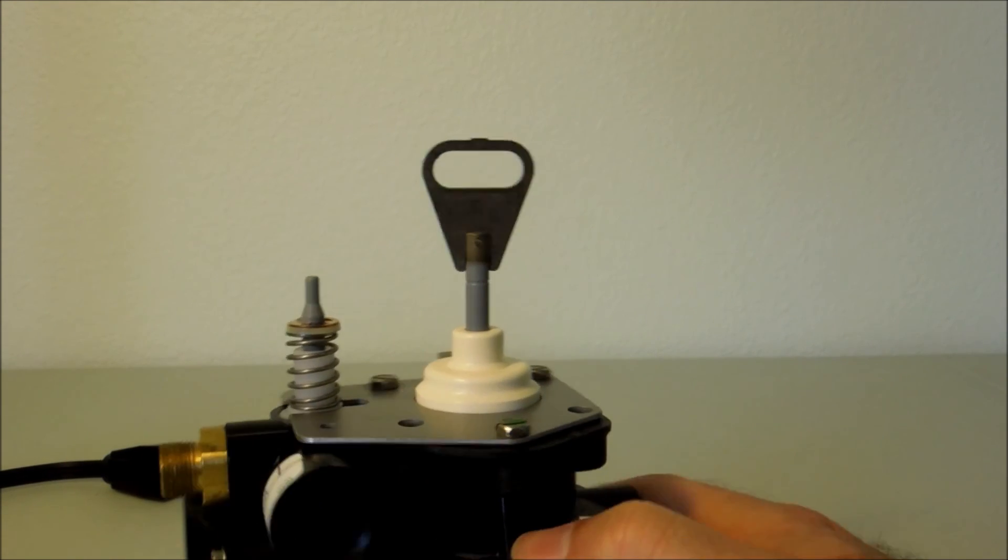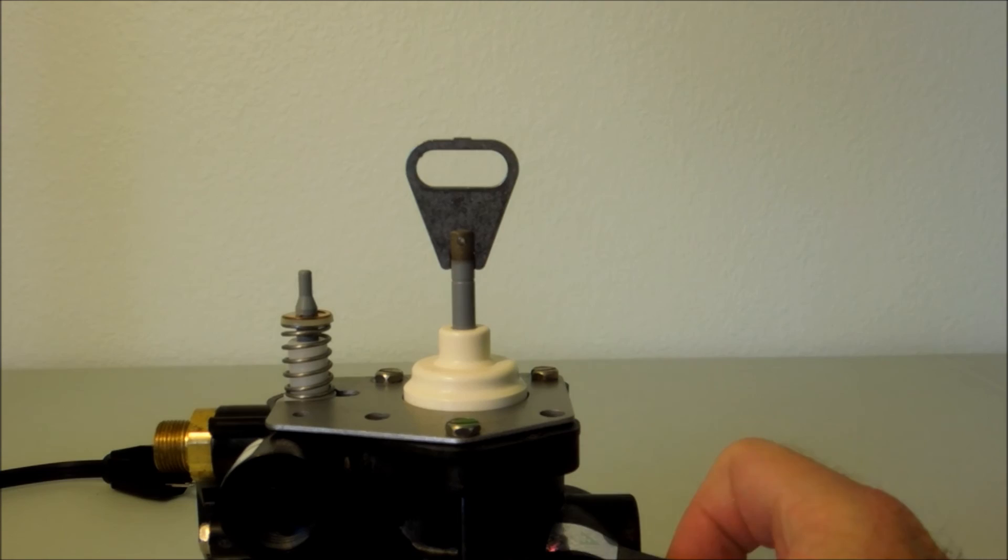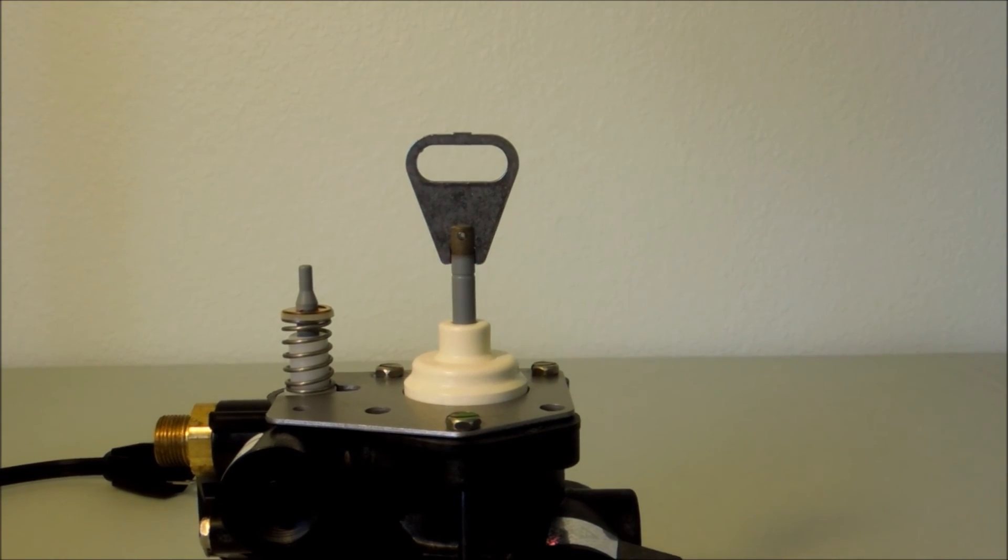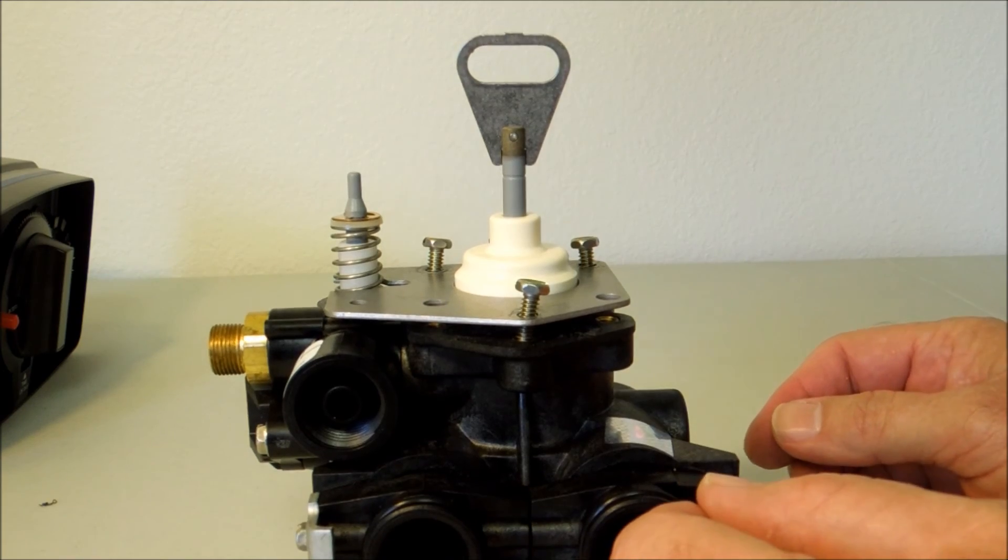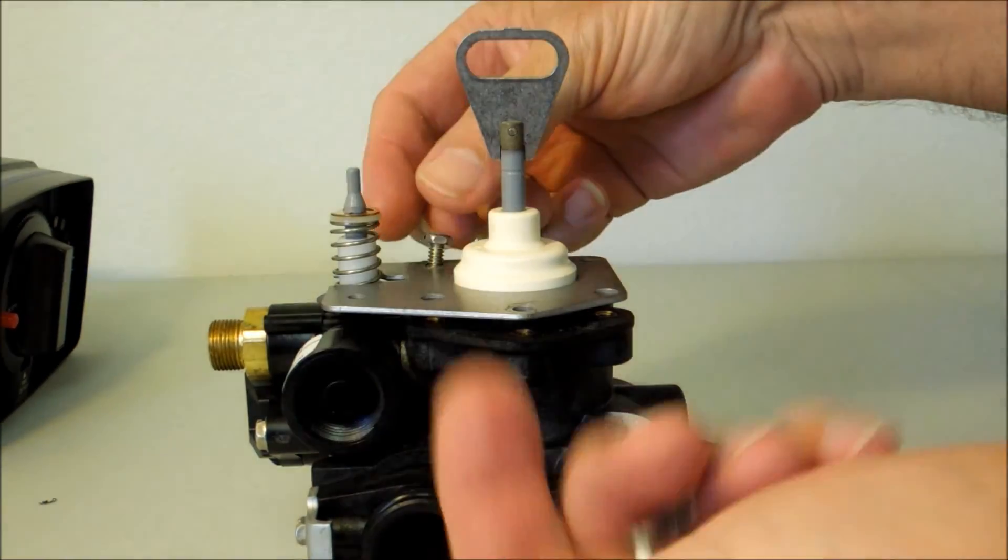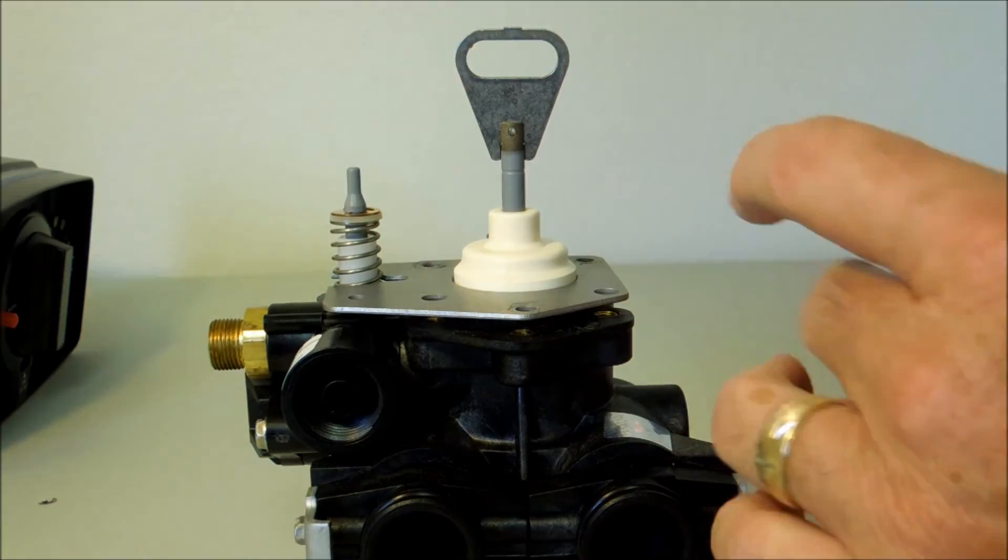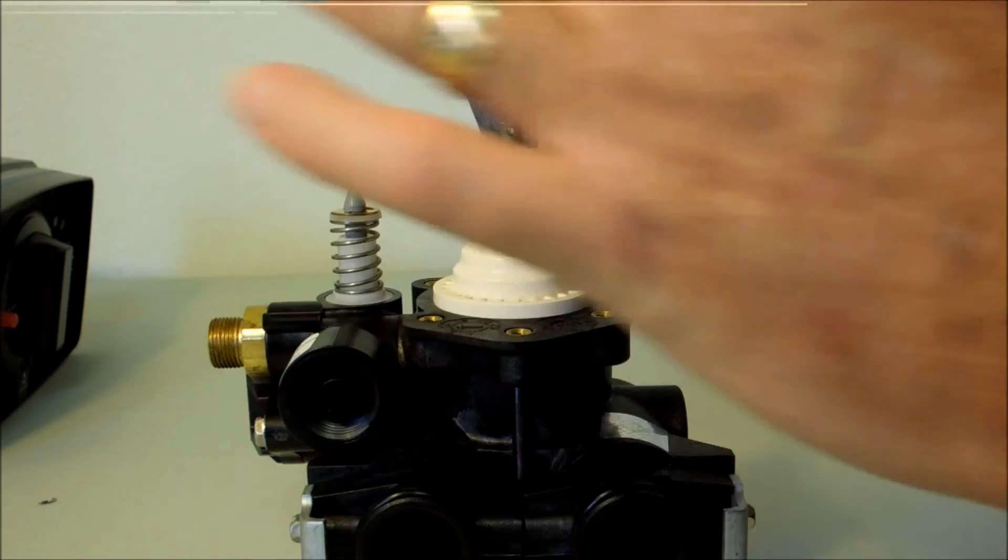This will make it easy to work on the valve body where most of the changes need to be made. The next step is to remove the three screws off the top plate. The plate slides straight up.